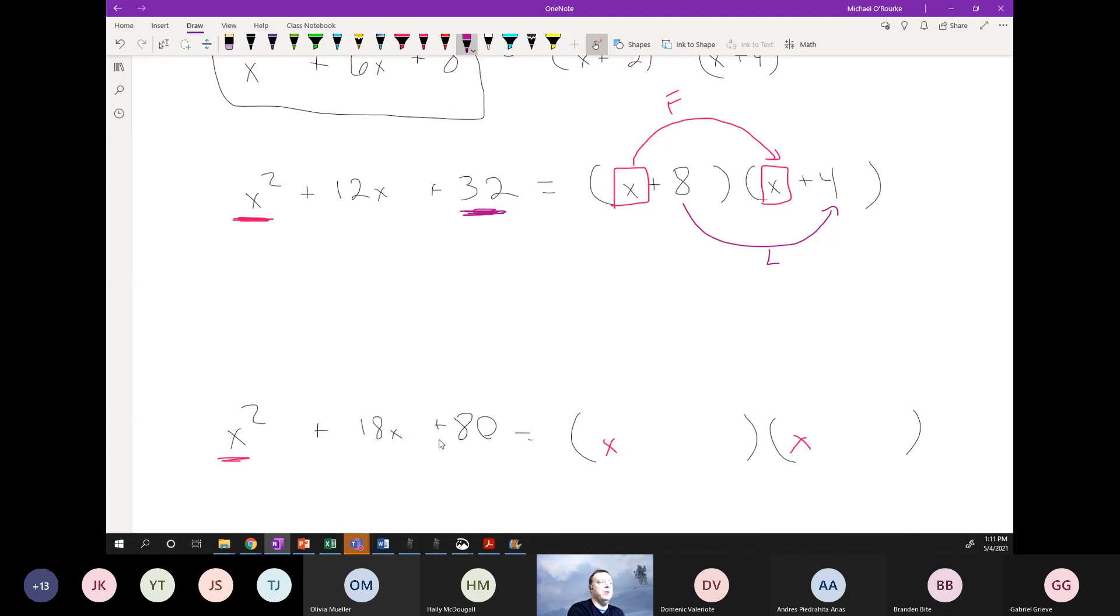So if we can figure those out, right? Now what students did here is they said, okay, what equals 32? And they thought in their head, what multiples equal 32? Well, one times 32, two times 16, four times eight. And those are the only numbers that multiplied equal 32.